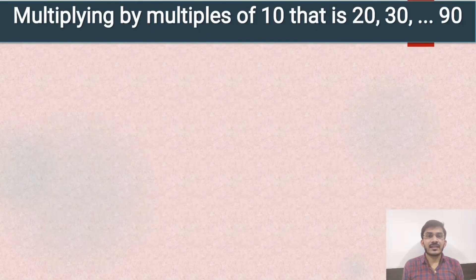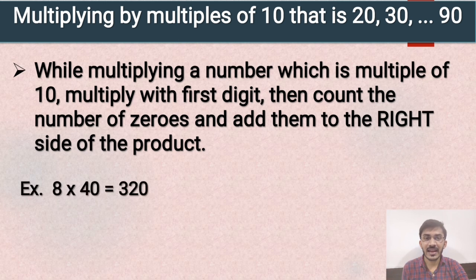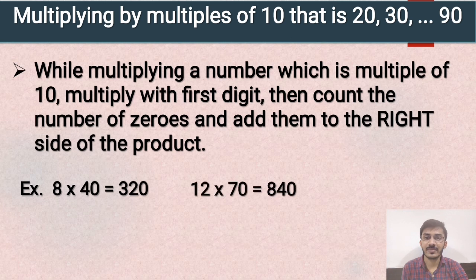Third topic is multiplying by multiples of 10 — that is 20, 30, 40 up to 90. There are also some rules to keep in mind. While multiplying a number which is a multiple of 10, multiply with the first digit, then count the number of zeros and add them to the right side of the product. For example, 8 multiplied by 40 — we multiply 8 with 4 only. So 8 fours are 32, and we add one zero at the end. So the answer will be 320.